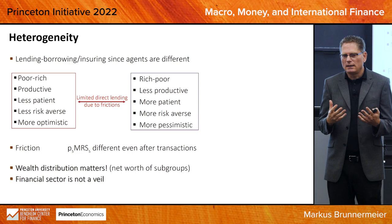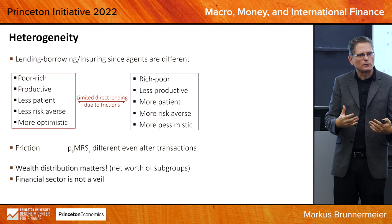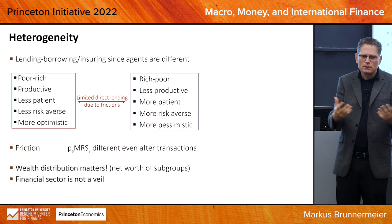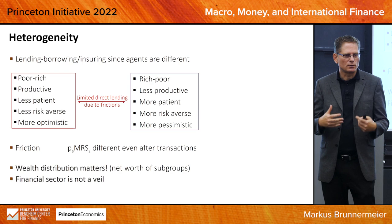Later on, we will put a financial sector on top. There are all these frictions, and the role of the financial sector is to reduce them. But sometimes the financial sector doesn't work well, so the financial frictions pop up again, and that creates cycles.